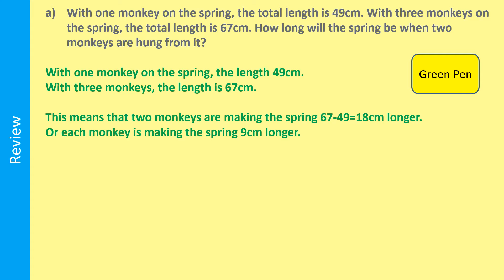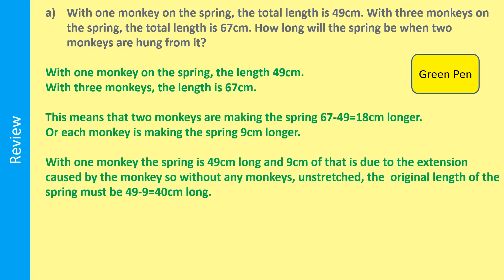Two monkeys are making the spring 67 minus 49 equals 18 centimetres longer, so each monkey is making the spring 9 centimetres longer. Bearing that in mind, going back to the beginning with one monkey the spring is 49 centimetres, and we know that 9 centimetres of that is due to the extension caused by one monkey. So if we take that 9 centimetres away, the original length of the spring must have been 49 minus 9 equals 40 centimetres long.